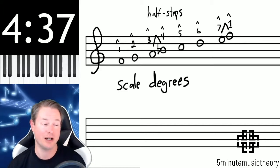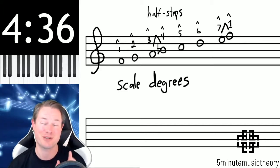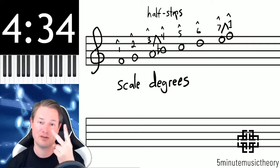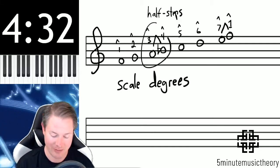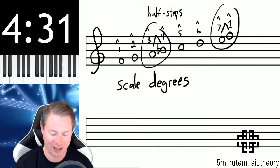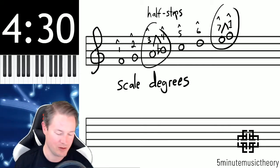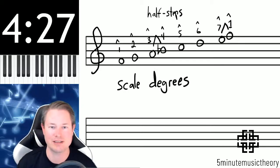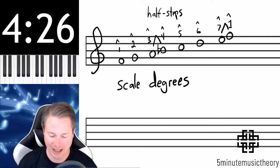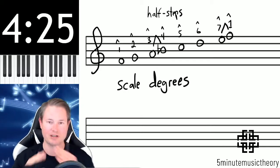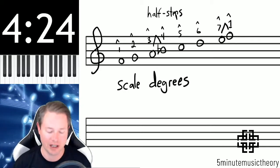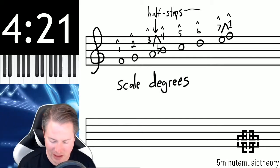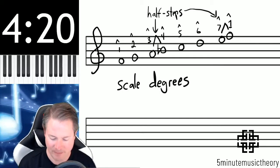Remember, the major scale is whole, whole, half, whole, whole, whole, half. So there are two sets of half steps and you can see them here and here. I used the most universal symbol to indicate half steps, which is called a tent marking above those, and those are the half steps here and here.